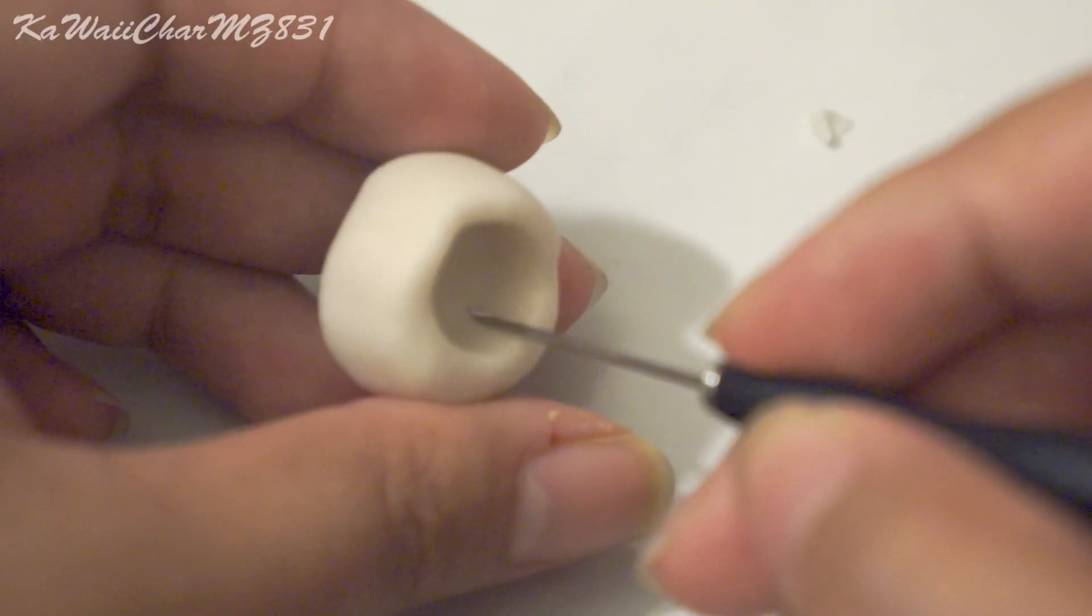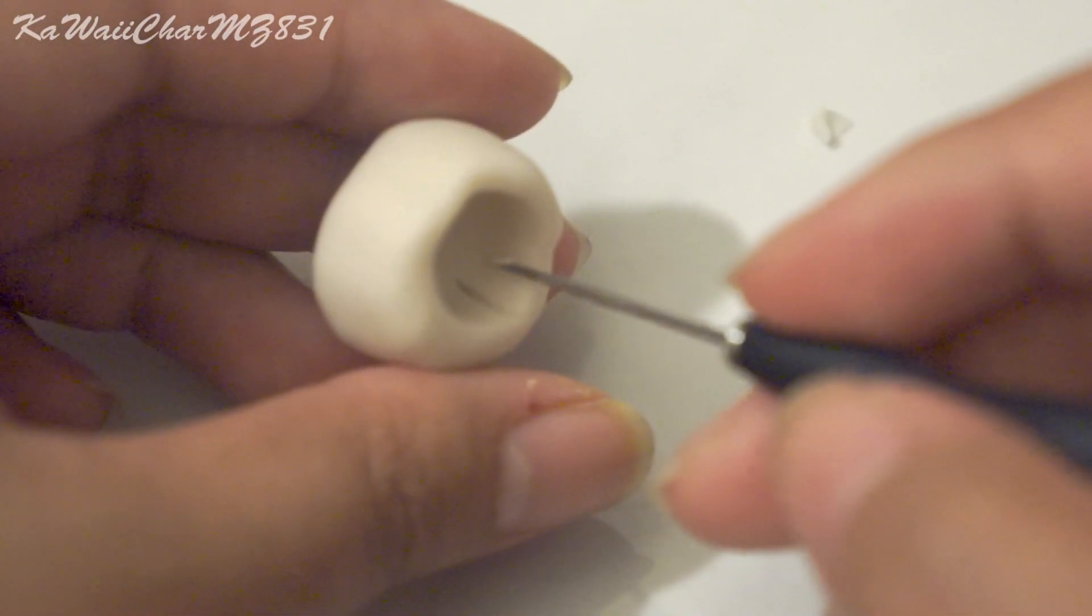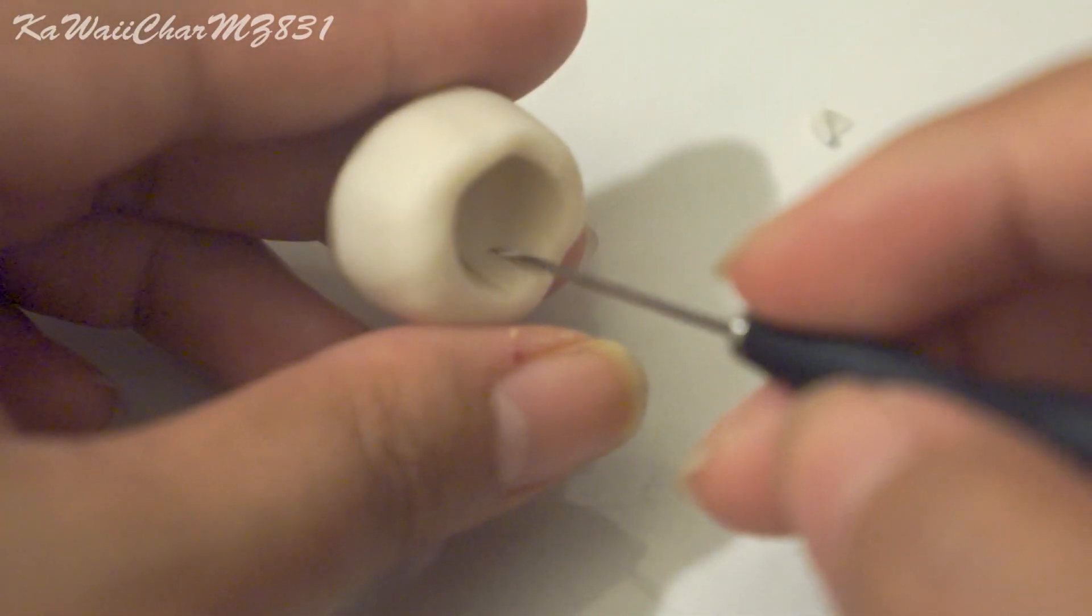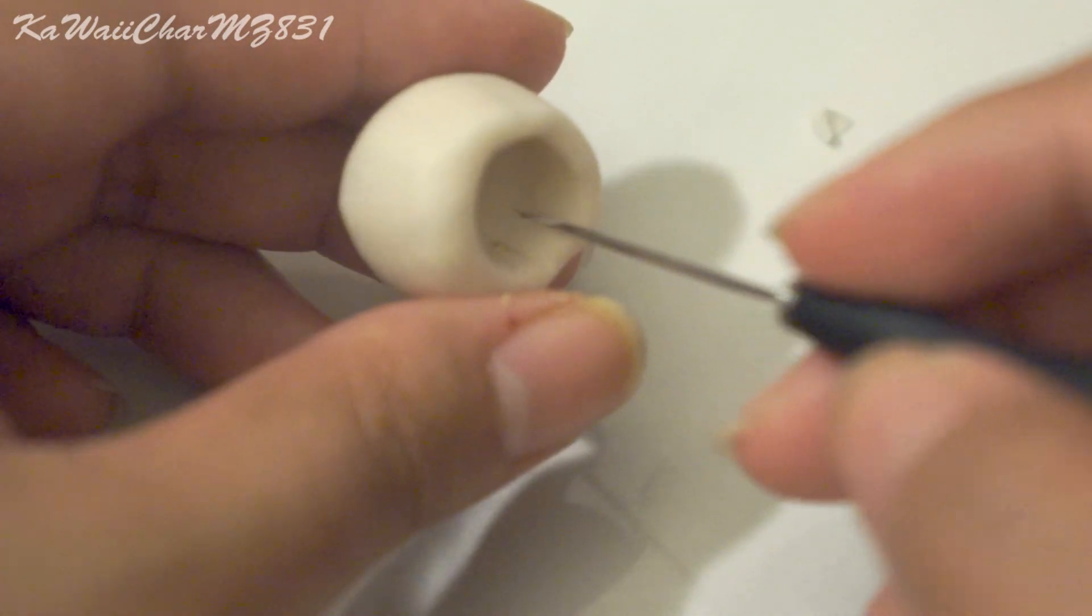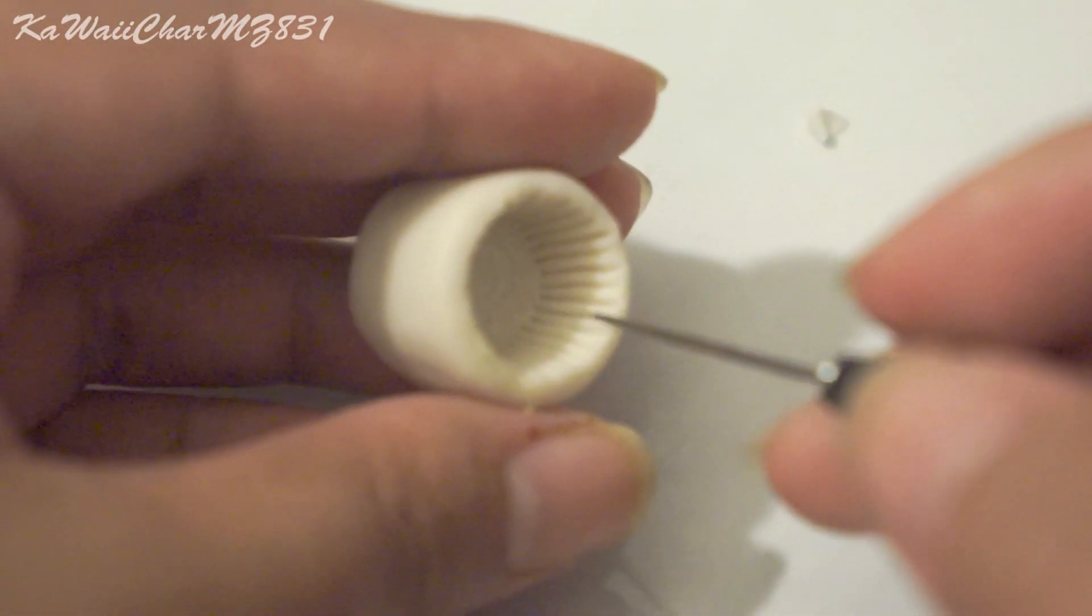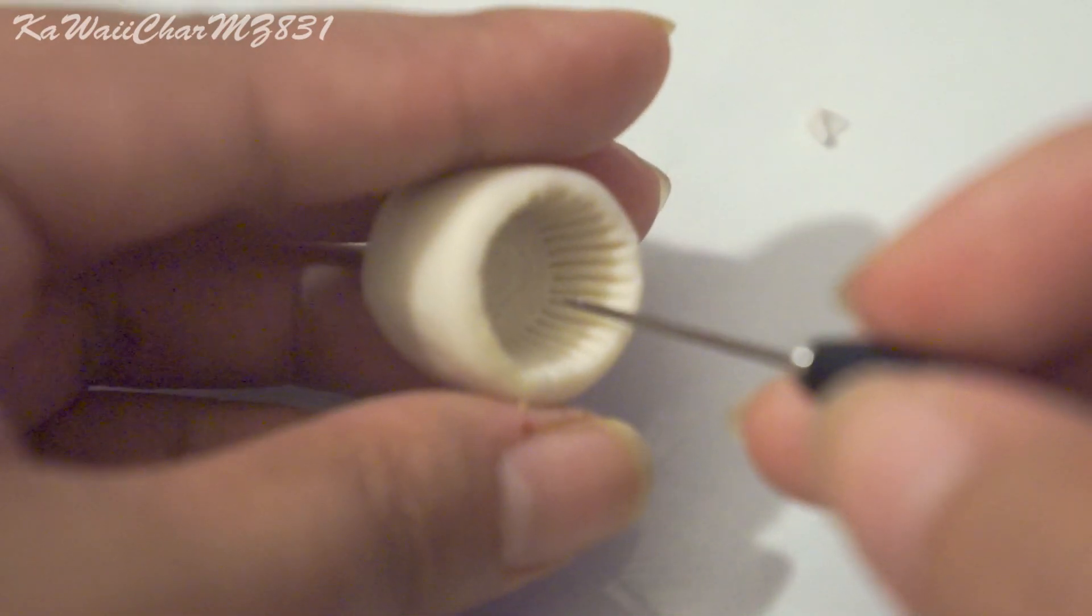So once that's done, you're gonna take your needle tool and create some indentations within that hole that you just created. And after you've created the indentations, it should look something like this.